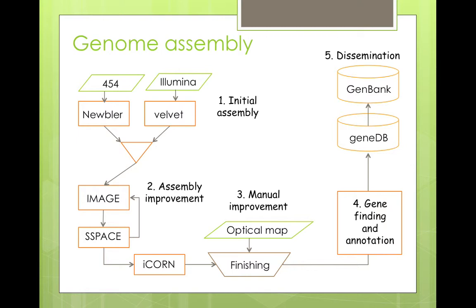The tapeworm genomes were sequenced using several different techniques: 454, Illumina, and some shotgun sequencing as well. They were assembled using Nubler or Velvet. Then we went through a stage of bioinformatic assembly improvement, closing gaps and scaffolding everything together. We used several tools which were actually developed at the Parasite Genomics Group at the Sanger Institute, such as Image and Icon.